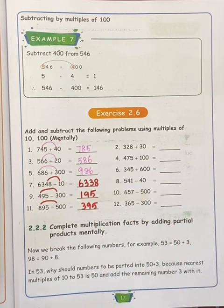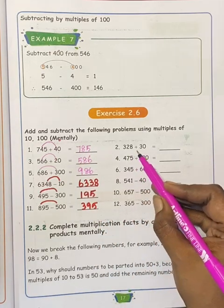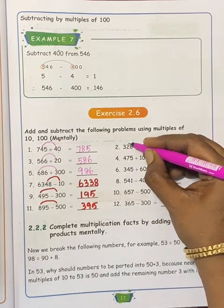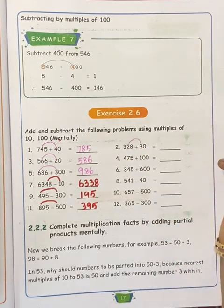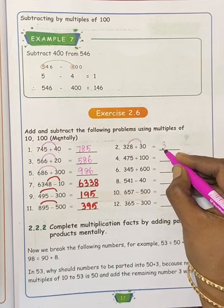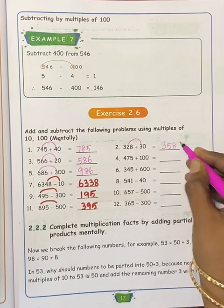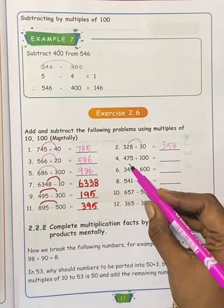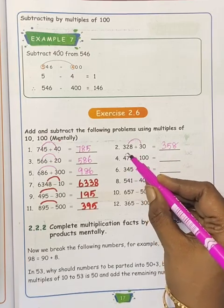Next, 328 plus 30. 10s place, 10s on join. So 3, 5, 8, 358.